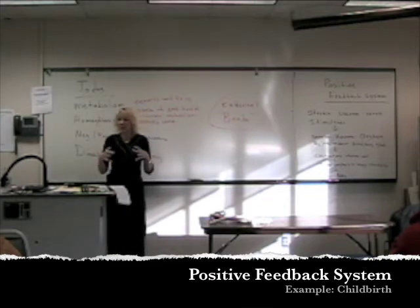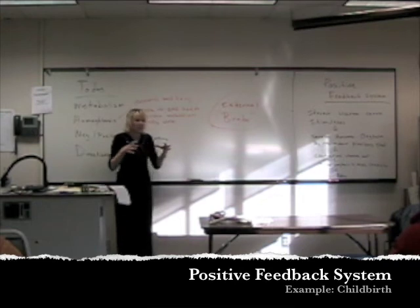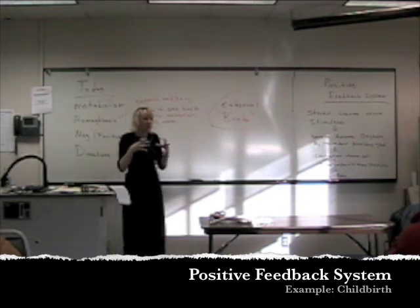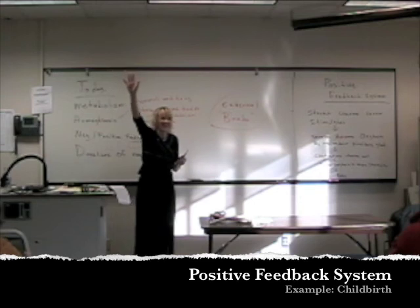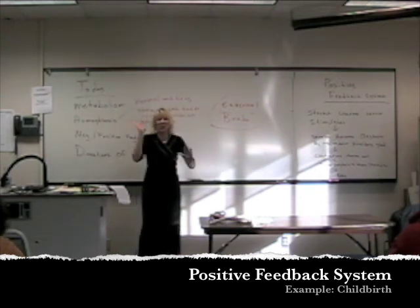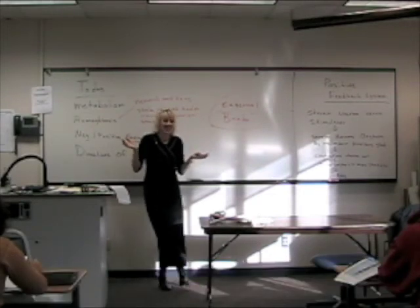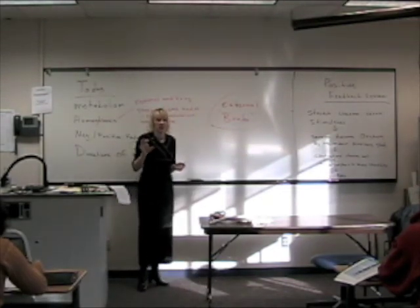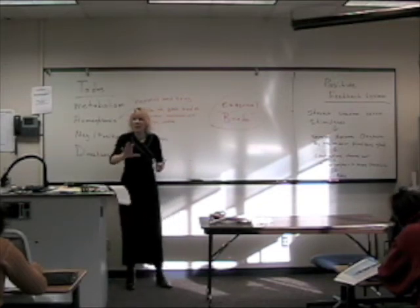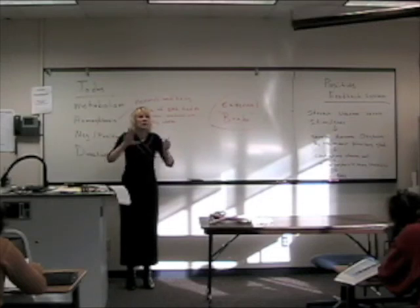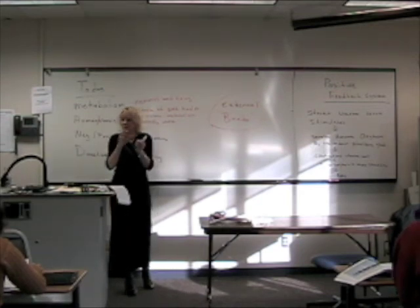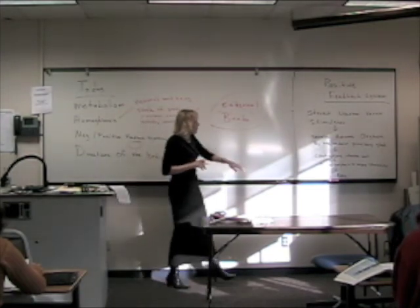Oxytocin causes the uterine wall to contract, and that contracting causes more oxytocin to be secreted. They go in this escalating pattern — in labor it gets more and more and more. It's going to keep going. You could say you changed your mind, but your body is going to keep going through this process until there's an external break. What's the external break? The baby. When the baby comes out and the placenta comes out, that's the external break that turns off the whole system. Contractions slow and eventually stop.